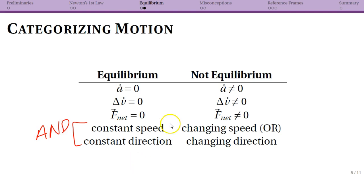On the other hand, for a situation where we are not in equilibrium, we know that our acceleration is not equal to zero, which means that we have a change in velocity that means that our net force is not equal to zero. Now in this case we would see a changing speed and/or a changing direction. Keep in mind that you might only be changing direction and not actually be changing speed, and we would still have acceleration in that case.